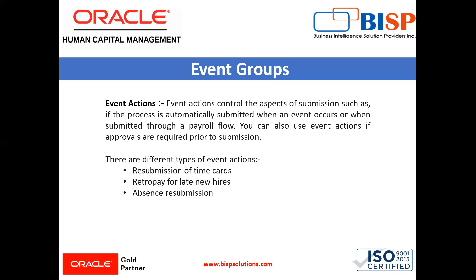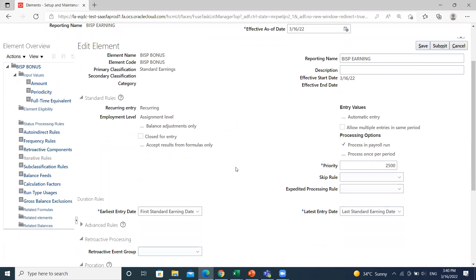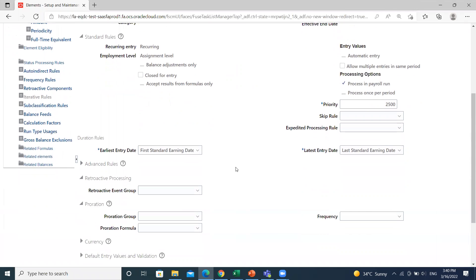Let's move on to the application where we can see how to define the proration and retroactive event groups. Under the element creation page, when you create the element, you can define the retroactive pay and proration.